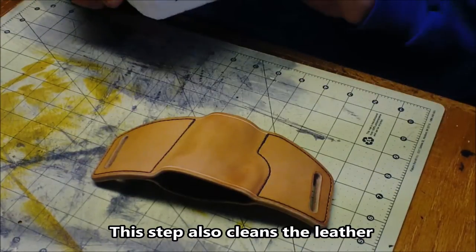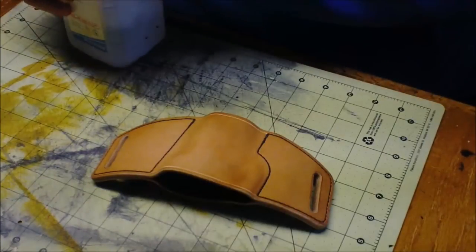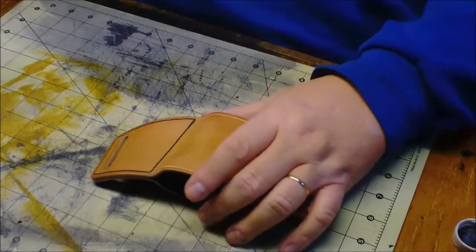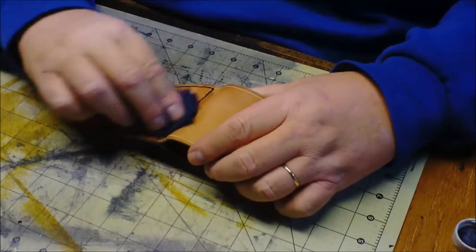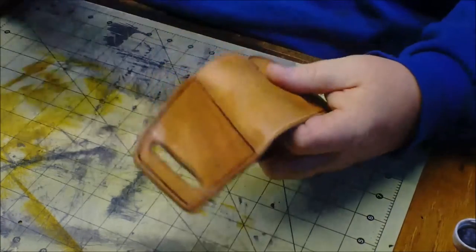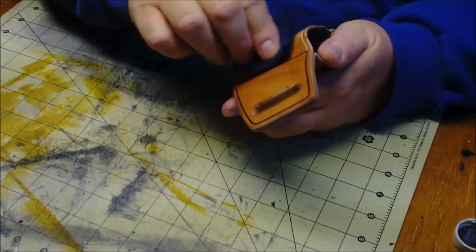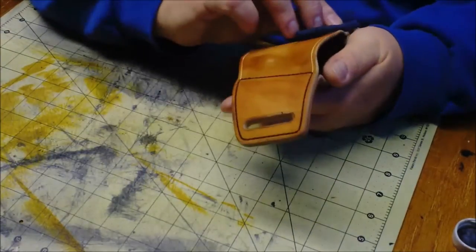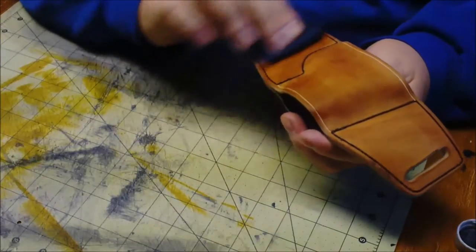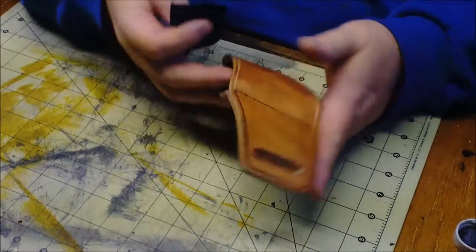This is just regular 70% isopropyl alcohol. You can go to Walmart or your local pharmacy and get it. I just kind of wipe it down. This seems to let the dye penetrate better. I noticed when I started dyeing after I started doing this, my dye was a lot better. It doesn't take much. Just wipe it down.